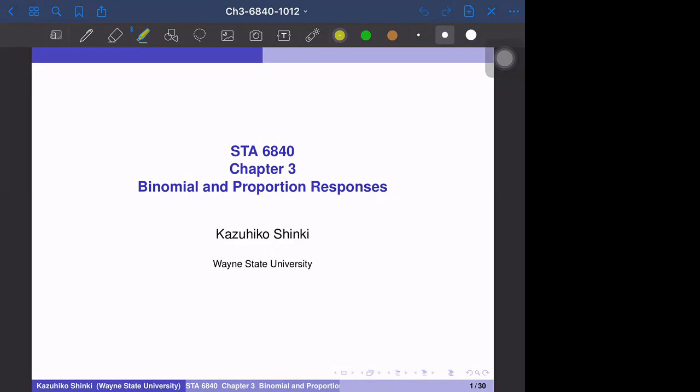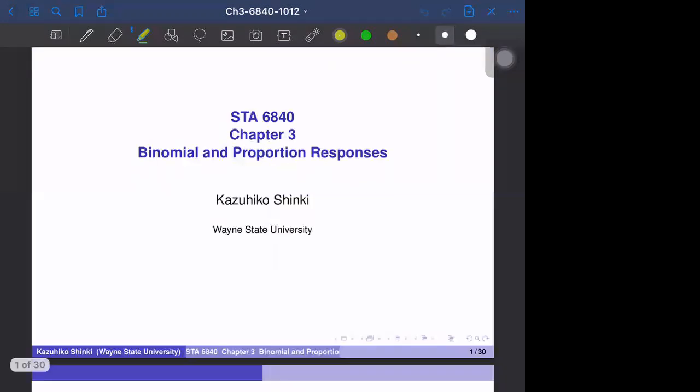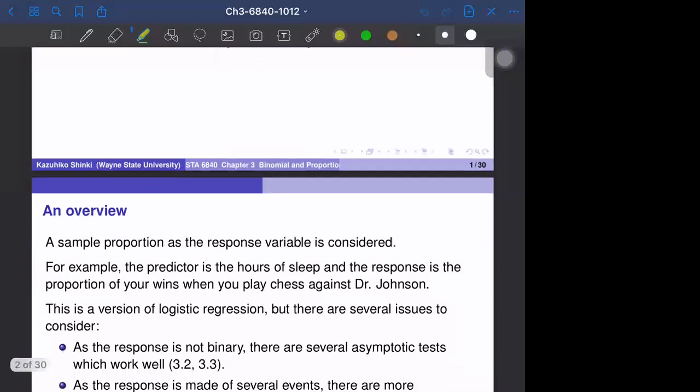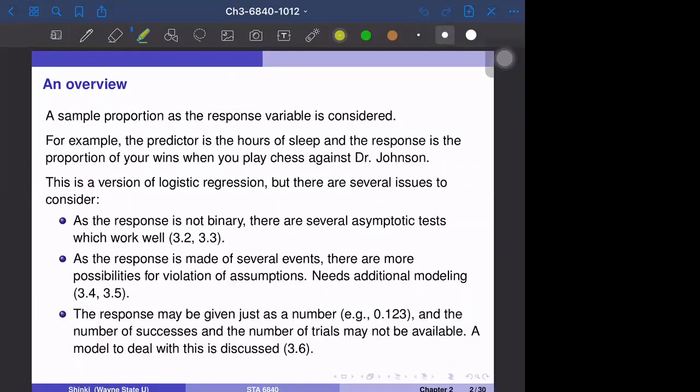Hi everyone. The binomial and the proportion responses. So before starting, I would like to have an overview. So in this chapter, the response variable is the sample proportion, such as 3 out of 5.